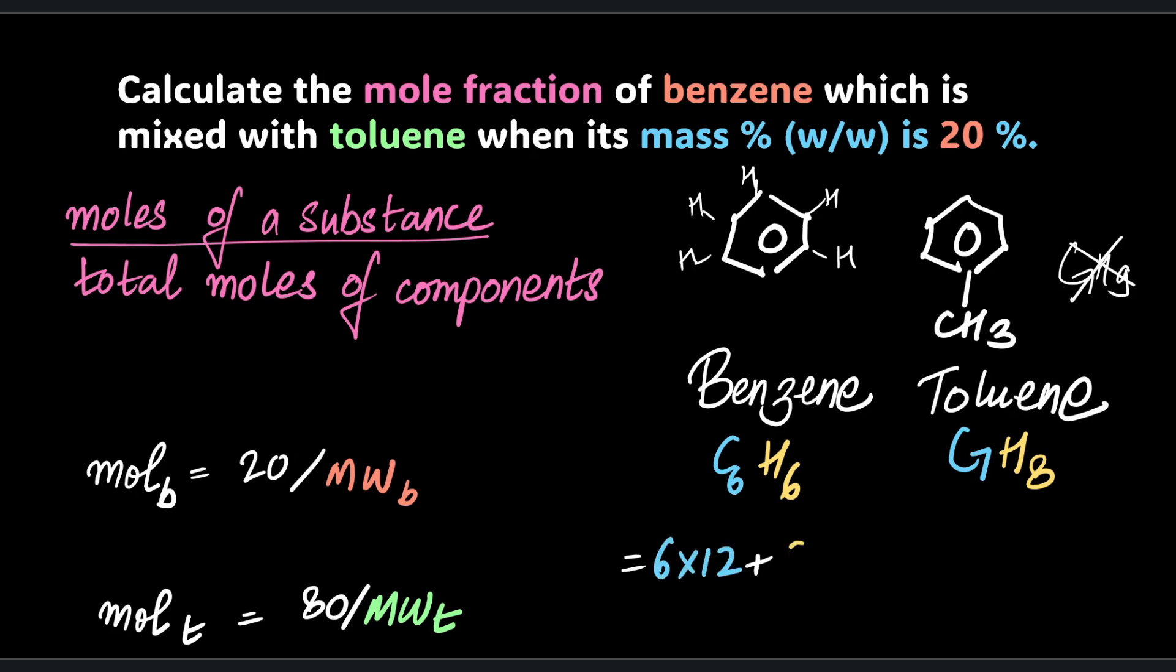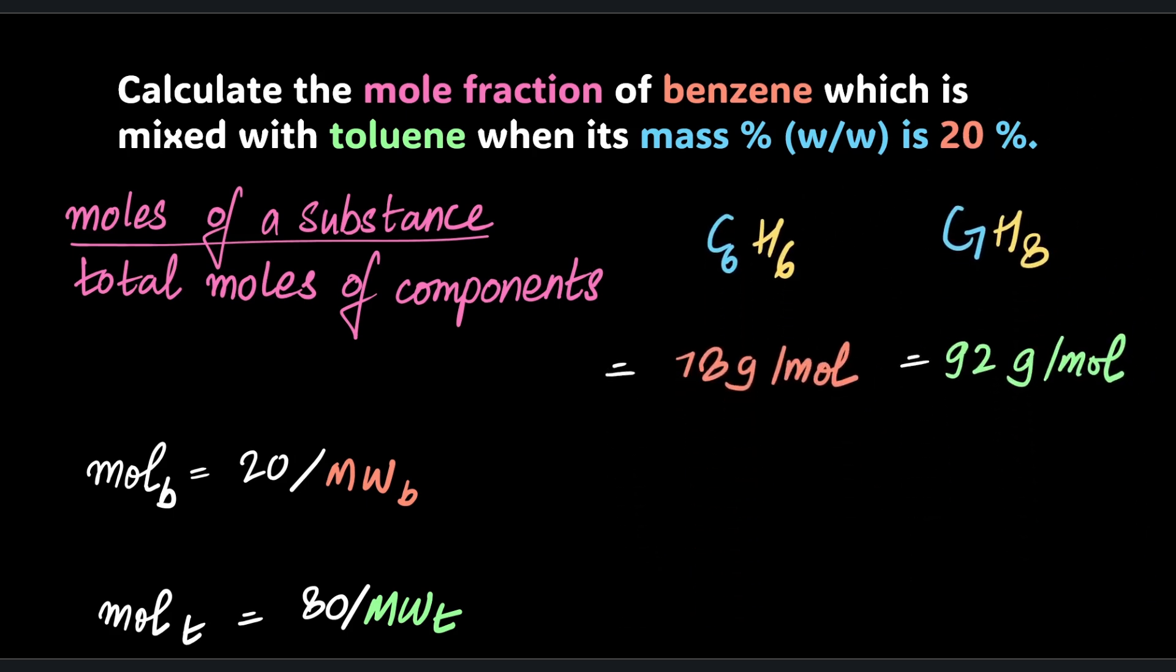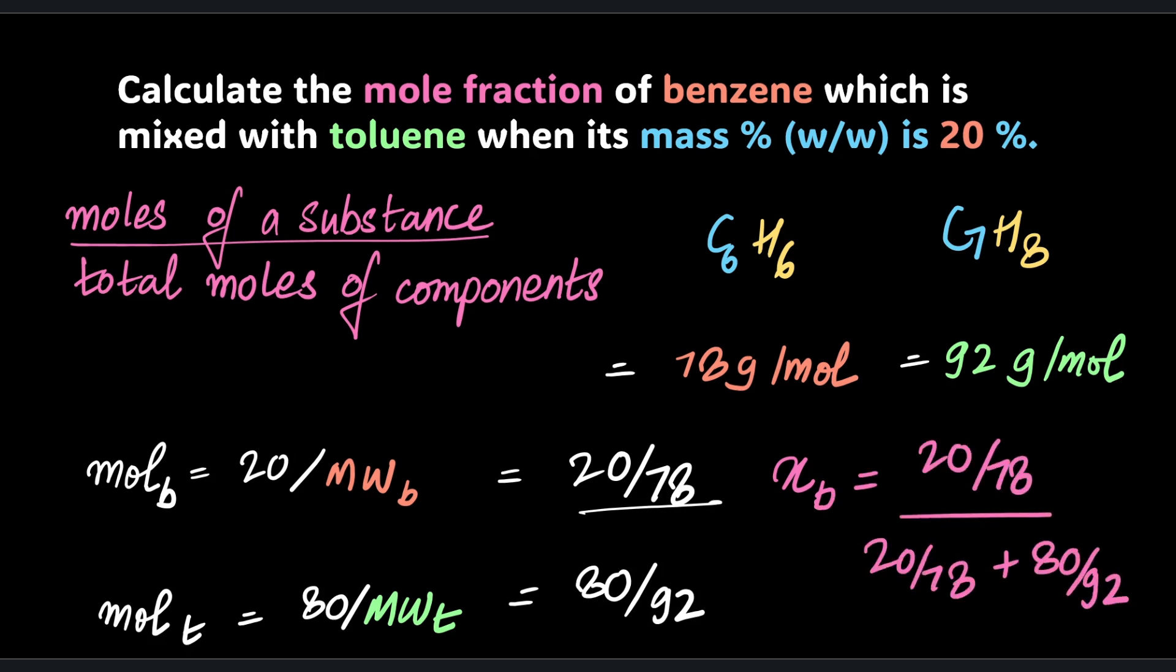From here you can get the masses. Carbon is 12, the molar mass of carbon, and hydrogen is one. Add it all up, you get these molar masses: 78 grams per mole and 92 grams per mole. I think we are more or less done with this question. You get the individual moles of benzene and toluene, and all you've got to do is divide the moles of benzene by the total number of moles. I think you can take it from here, and let me know the answer in the comments.